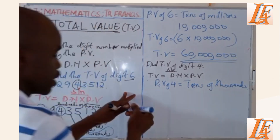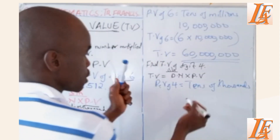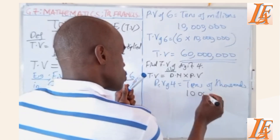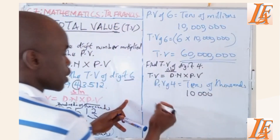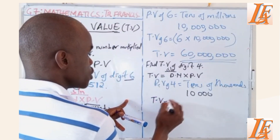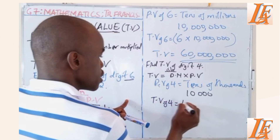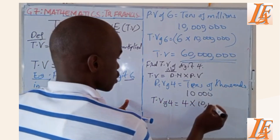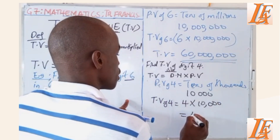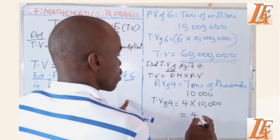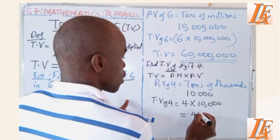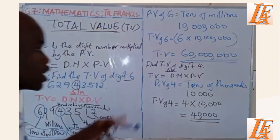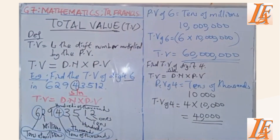And in figures, tens of thousands is written as 10,000 — thousands has three zeros, plus one more zero for tens, giving four zeros total. Therefore, the total value of digit 4 is given by digit number 4 times 10,000. 4 times 1 is 4, then these are 4 zeros. So the total value of digit 4 is 40,000.